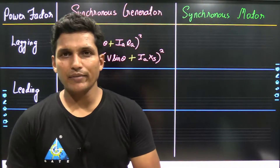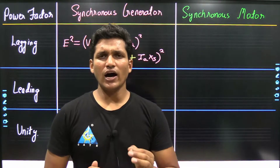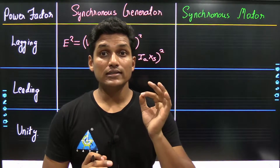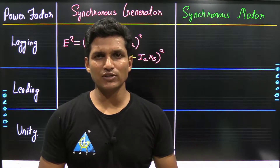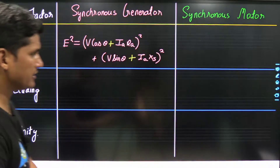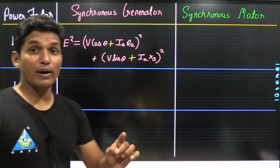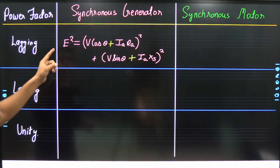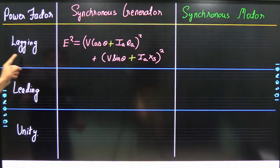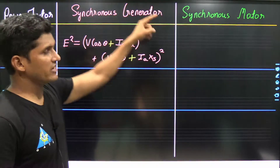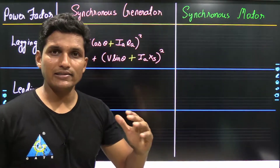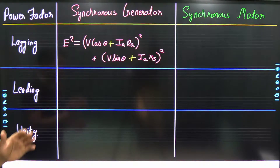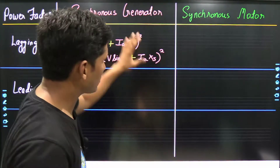Hello everyone, welcome to K Tech Academy. This video explains how to remember formulas for induced EMF for a cylindrical rotor synchronous machine. You only need to remember the formula of induced EMF at lagging power factor of the synchronous generator; the other power factor formulas can be derived from this particular formula.